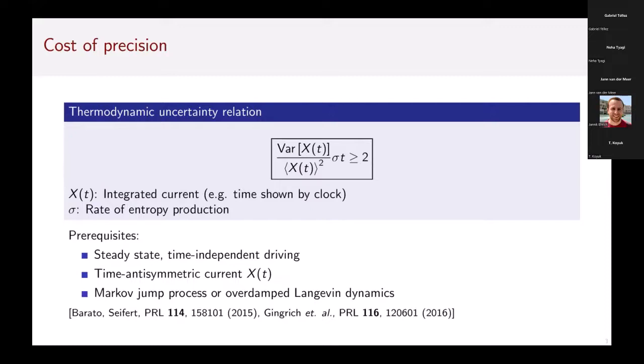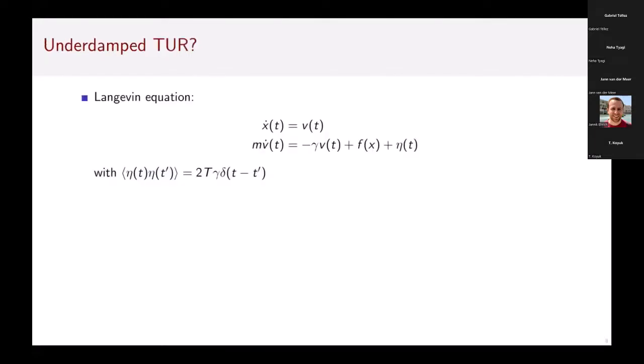One thing I want to focus on is that it's proven for Markov jump processes and also for overdamped Langevin dynamics, but we are still lacking a good understanding of underdamped motion. We're talking about a Langevin equation where you have a deterministic equation for x given by the velocity, and the velocity itself undergoes Newtonian dynamics with friction term, external force f, and the usual Gaussian thermal noise.